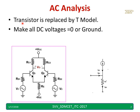In AC analysis, we replace transistors Q1 and Q2 by an equivalent T model. This is the base, emitter, and this is the collector. Q1 and Q2 are both replaced by this T model. Whenever I do the AC analysis, I have to make all DC voltages equal to zero, or I have to ground them.